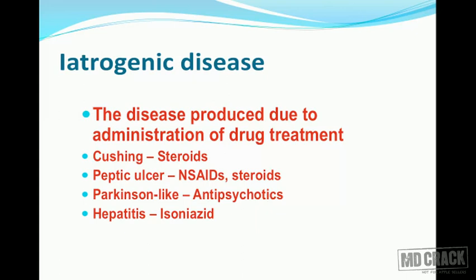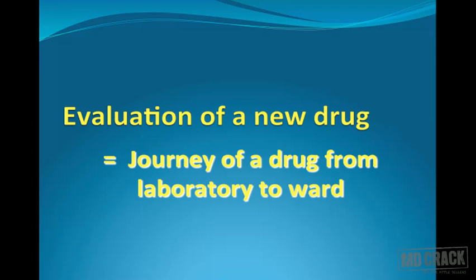Iatrogenic disease is an abnormality happening inside the patient due to drug administration — disease produced due to drug treatment. This can happen when corticosteroids are given for a long time and the patient shows manifestations of Cushing's syndrome, or when NSAIDs or steroids produce peptic ulcer, anti-psychotic drugs produce various involuntary movements including Parkinson-like movement, or isoniazid precipitates hepatitis.